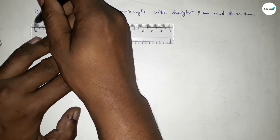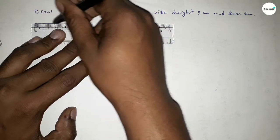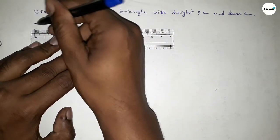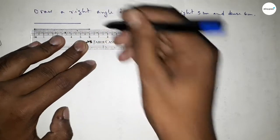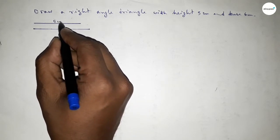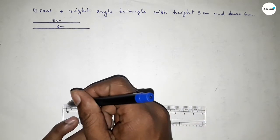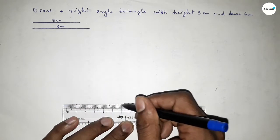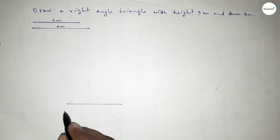First of all, we draw a line of length 5 centimeters, and then another line of length 6 centimeters — starting from 0 to 6. Now we draw the base of the triangle, which is 6 centimeters. Taking point B at one end and point C at the other end.